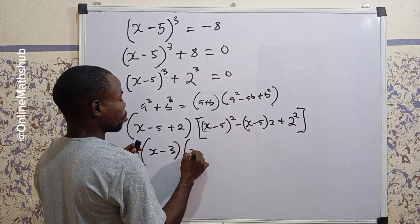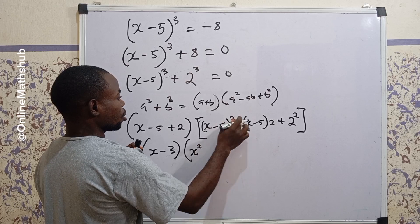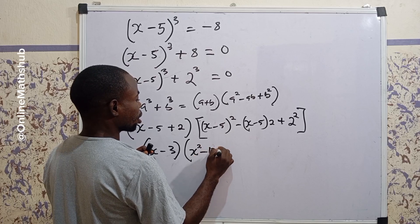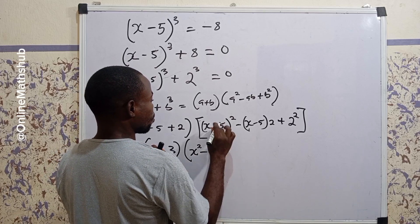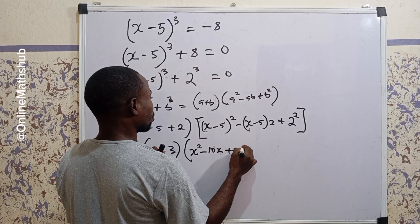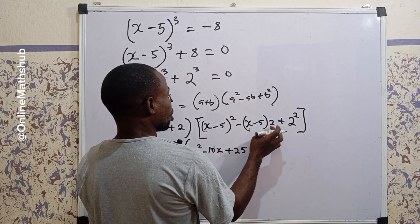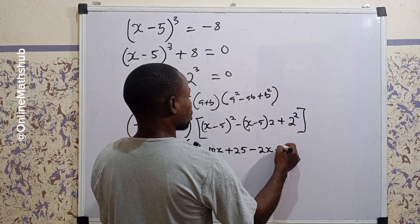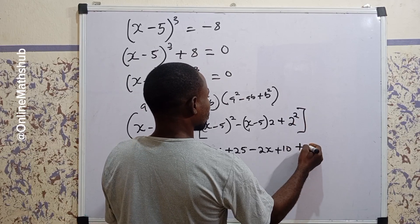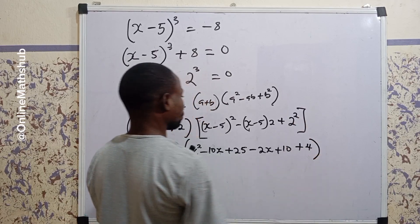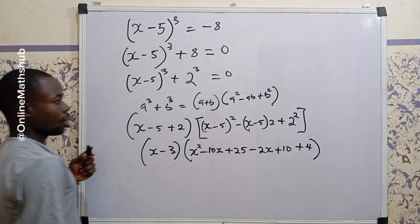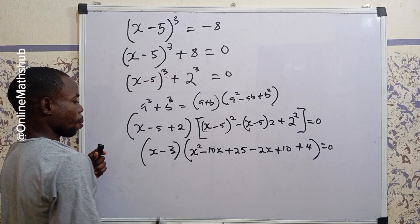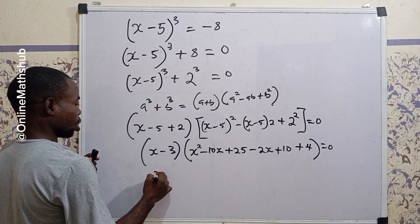Opening the (x minus 5) squared bracket gives x squared, then 2 times x times minus 5 which is minus 10x, plus 25. Then opening the next part gives minus 2x plus 10, and 2 squared is equal to 4. Don't forget this is all equal to 0.